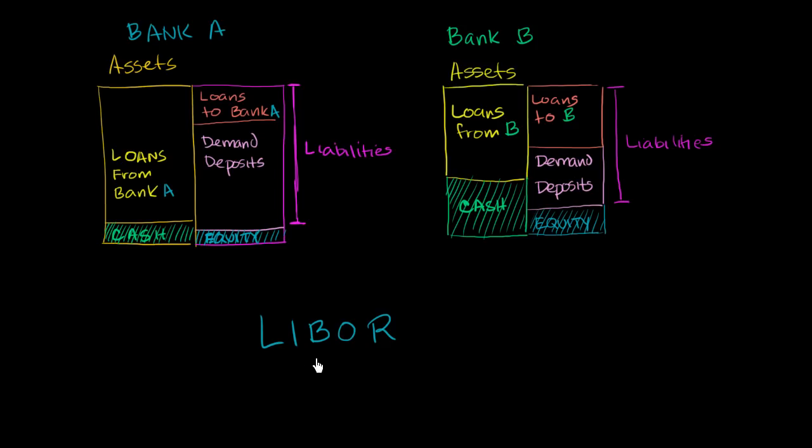It literally stands for the London Interbank Offer Rate. In London, it's the offer rate between banks, the London Interbank Offer Rate. To understand that a little bit better, I've set up two banks over here: Bank A and Bank B.